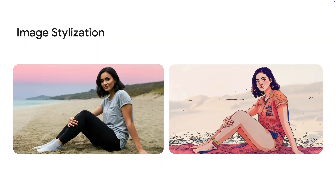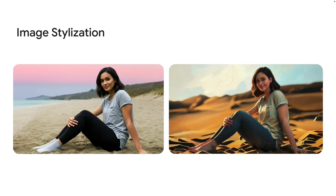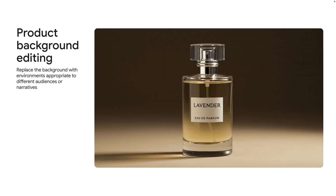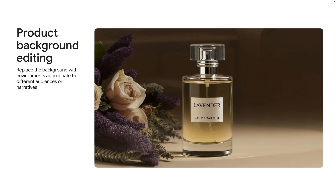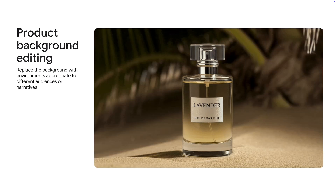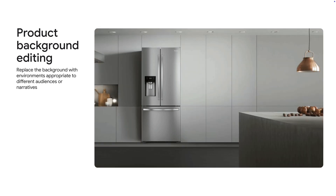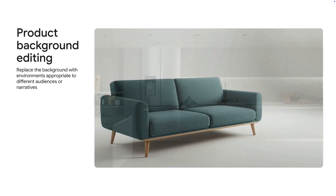Imagen can also stylize your image into many different art styles, including oil painting, 3D art, and many more. The background replacement feature is actually quite useful in e-commerce, because you can generate different backgrounds for your product image. It works for a wide range of products, from small items like a perfume bottle, to big items like appliances or furniture.